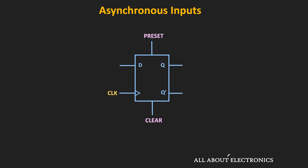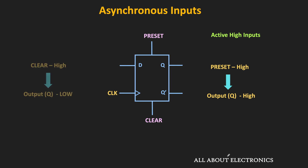For now, let's assume that these inputs are active high. When the preset input is high, then regardless of the other inputs, the output of the flip-flop will become high. Likewise, when the clear input is high, then regardless of the other inputs, the output of the flip-flop will become low. Whenever these inputs are low, the output of the flip-flop will be controlled by the synchronous inputs.